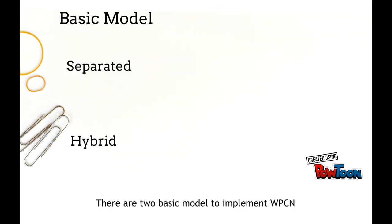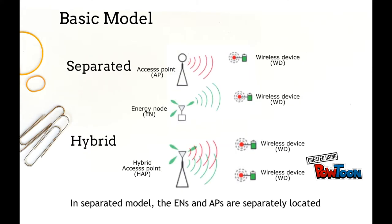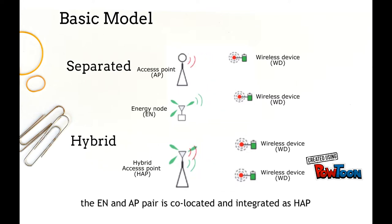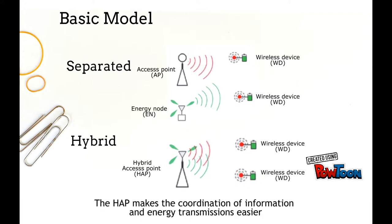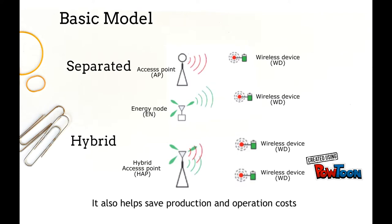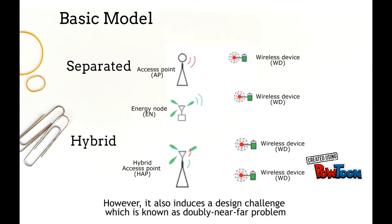There are two basic models to implement WPCN: Separated and Hybrid. In the Separated model, the EN and AP are separately located, whereas in the Hybrid model, the EN and AP pair is co-located and integrated as HAP. The HAP makes the coordination of information and energy transmission easier compared to separate AP and EN, and also helps save production and operation costs. However, it also induces a design challenge known as the near-far problem.